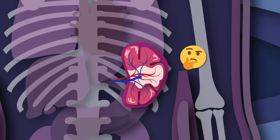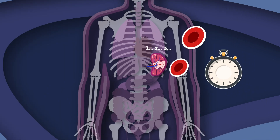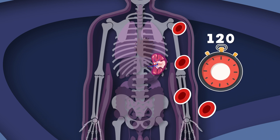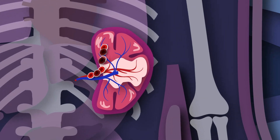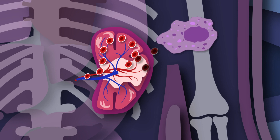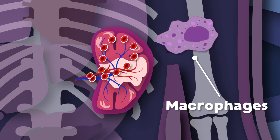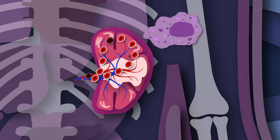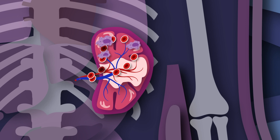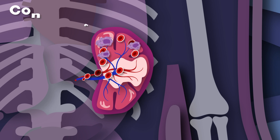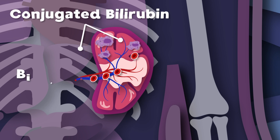Red blood cells last 120 days delivering oxygen to your body. When they're damaged entering the spleen, recycled is what they'll be. Healthy cells flow through, but those in their unhealthy stages are broken down by large white blood cells called macrophages. This all happens in the red pulp tissue. These macrophages' main job is to filter all the damaged cells out. Old red blood cells are turned into conjugated bilirubin, which is excreted through bile out of your body.